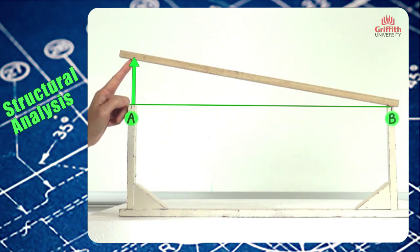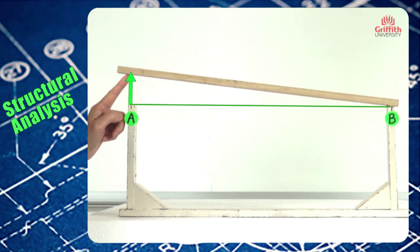And this deflected shape represents the influence line for RA.